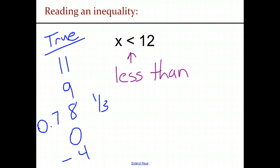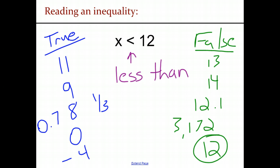On the other hand, for numbers that are false would just be any number that's greater than 12. 13, 14, 12.1, 3172, and also 12. 12 is not less than 12. 12 is equal to 12. So technically, this cannot fit in the inequality. So everything less than 12 is true. Everything that is 12 or greater is false.